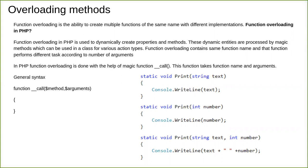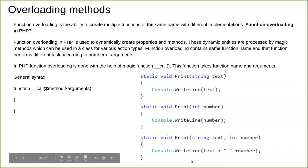The compiler can differentiate which function to call and correctly execute that particular function. So function overloading is the ability to create multiple functions of the same name. It gives you the liberty to create many functions with the same name but with different implementations — that is called function overloading.